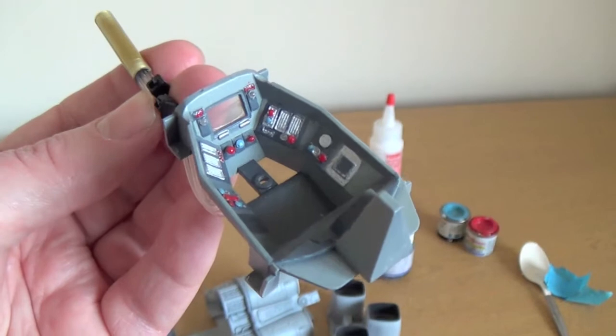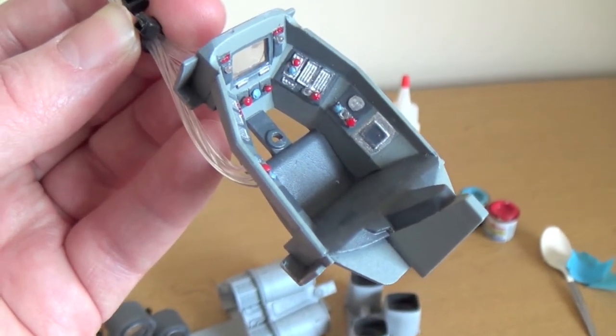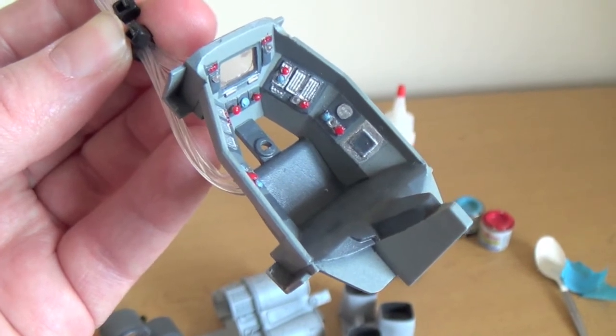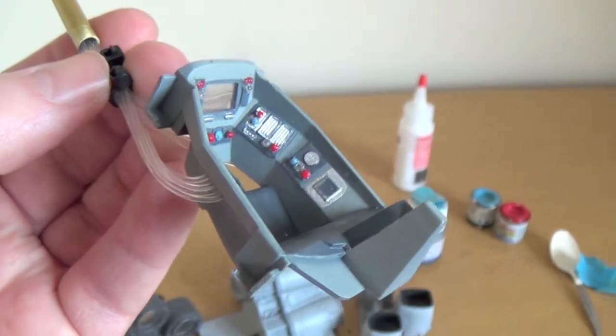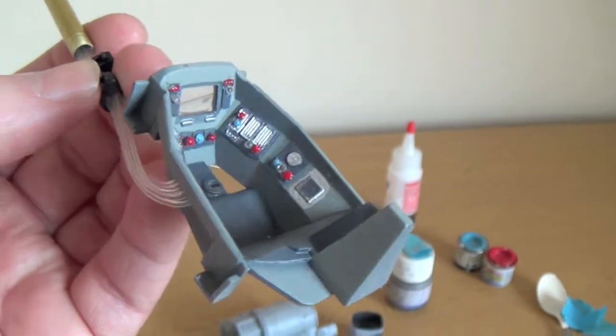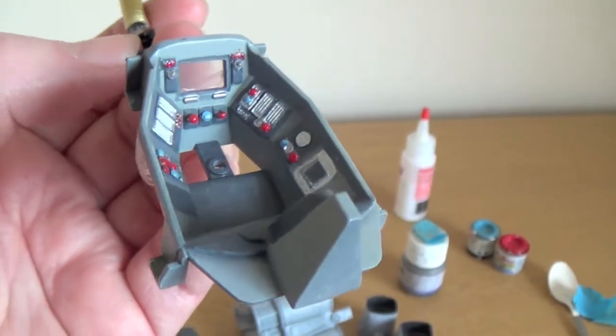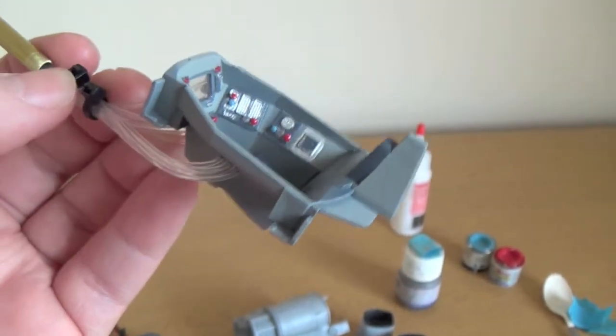And then we've got fiber optics and what I've done is on the end of the fiber optics I've offered them up to a little match, just to melt the end of the fiber optic. And what it does is it makes like a little bulb shape I suppose, a little dome, so that they can't pull through. A bit like the head of a pin. That's probably the best way to think of it actually, think of the head of a pin on the end of a fiber optic.